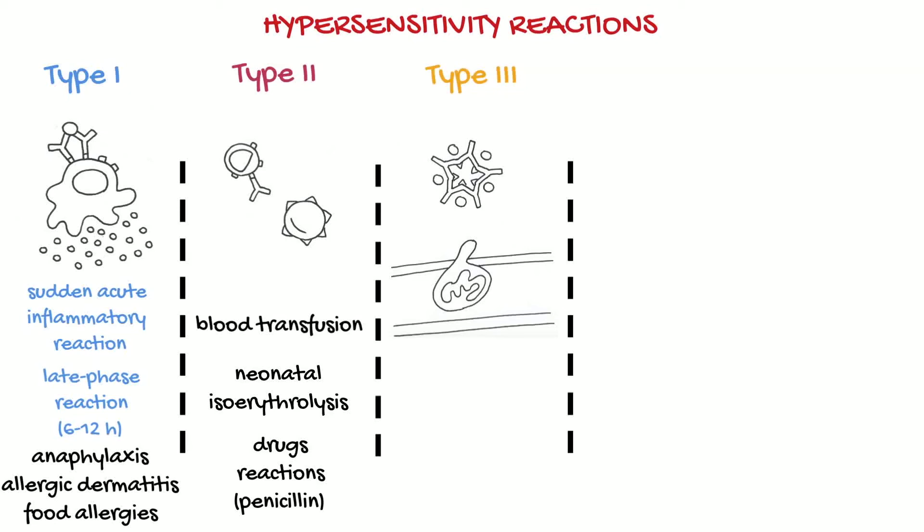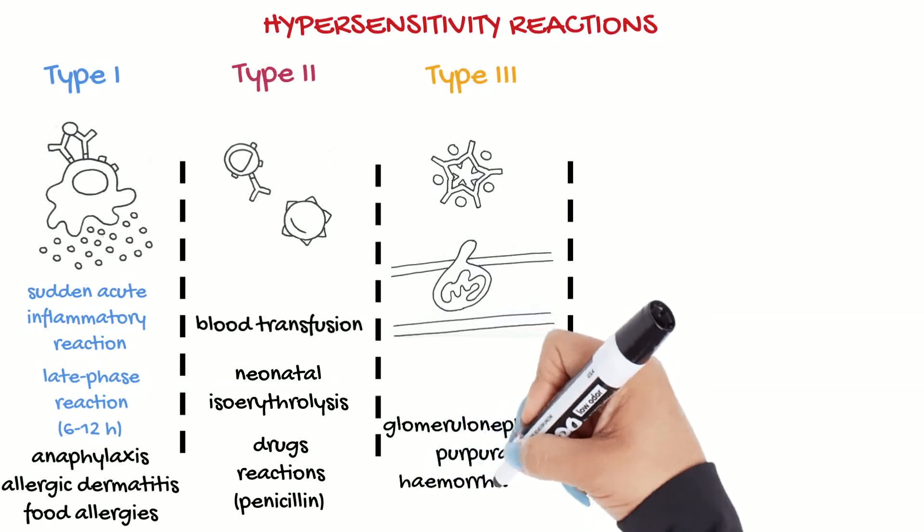Examples of this type of hypersensitivity in horses are glomerulonephritis and purpura hemorrhagica.